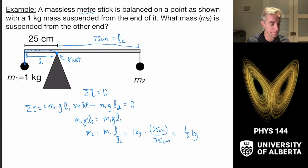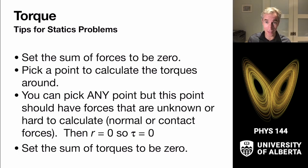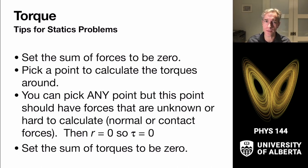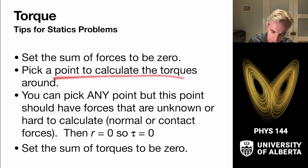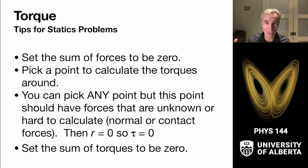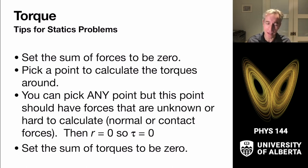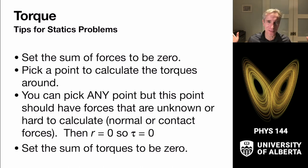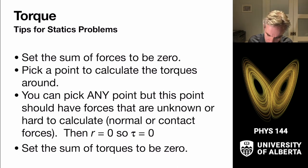To solve statics problems: first, draw a free body diagram and set the sum of forces equal to zero. Then pick a point to calculate torques around — it doesn't matter since the object isn't rotating, so you can pick any point. Pick somewhere that makes the math easy, like a point where unknown forces act, so those moment arms are zero and those torques drop out of the equation. You can even pick two different points if you need different equations. Then set the sum of torques equal to zero.